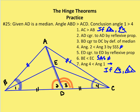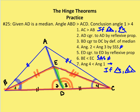ED is congruent to itself by the reflexive property. Now going to another set of triangles: BE is going to be less than EC by the hinge theorem, because angle two is less than angle three, ED is congruent to itself, and BD is congruent to DC — so I have my hinge. Therefore BE is less than EC. And if BE is less than EC in triangle BEC, then angle one has to be greater than angle four.